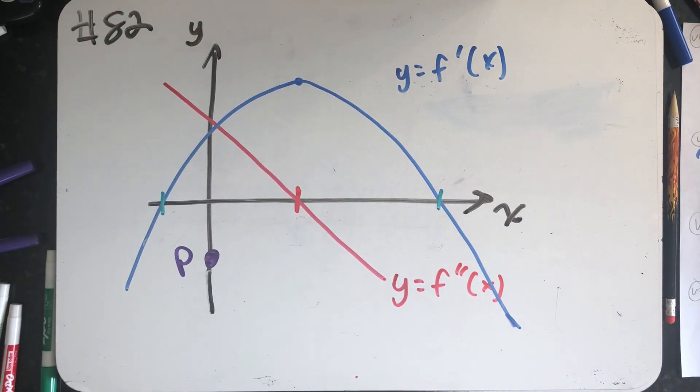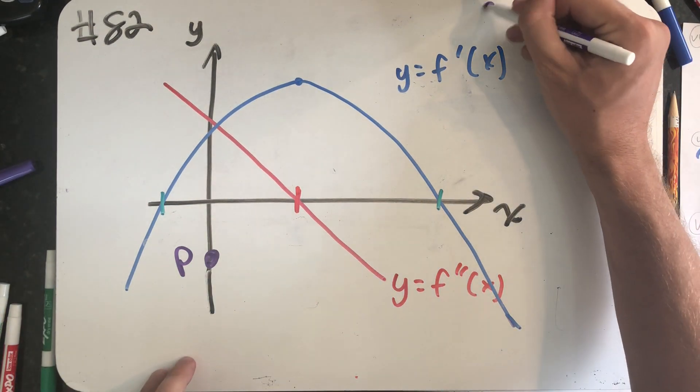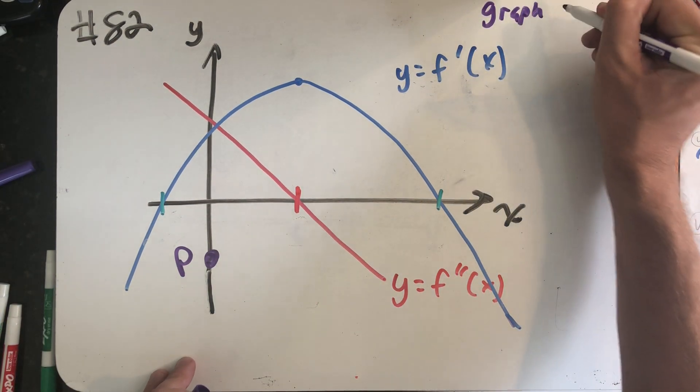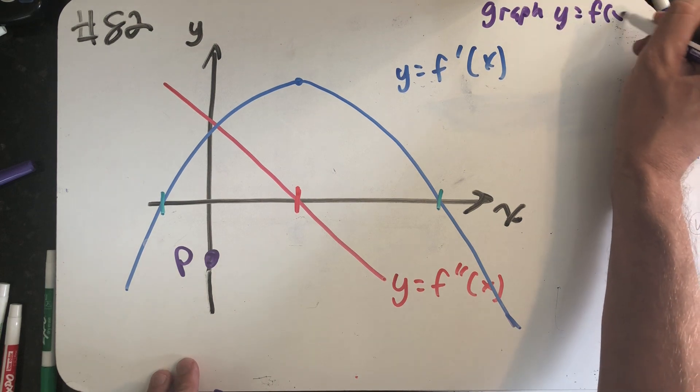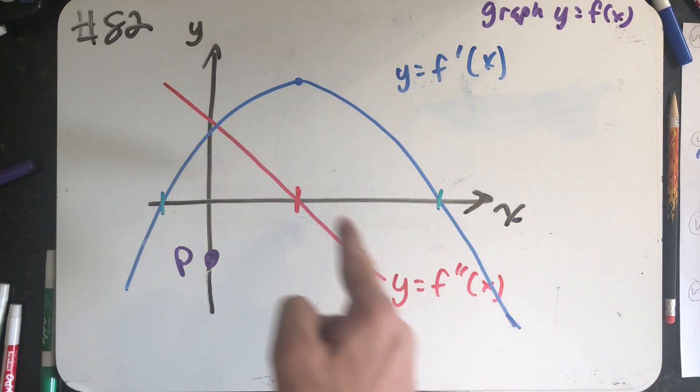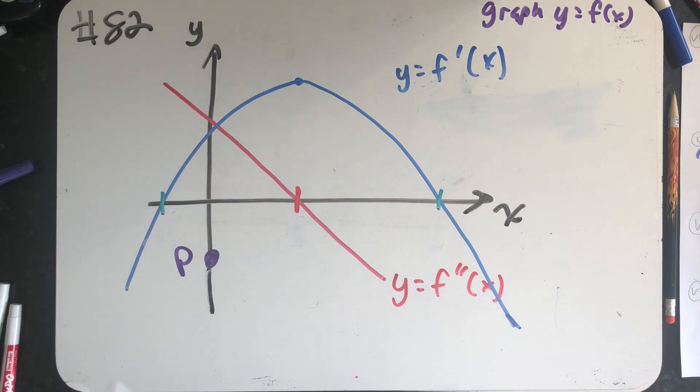I've copied the problem over to the whiteboard, and I want to draw a graph that could be the graph of y equals f of x. I like to think about this as graphing a potential y equals f of x. I've gone and put some marks here because I think those are going to be important places.